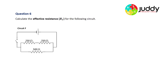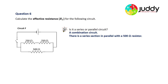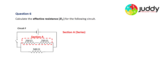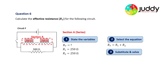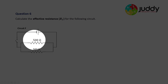Question six: calculate the effective resistance for circuit F. Once again it's a combination — there is a clear series section in parallel with a 500 ohm resistor. Section A is in series. For section A: the first resistor is 250 ohms and the second is 250 ohms. Since they're in series, we simply add them: R1 plus R2 equals 250 plus 250, giving a branch resistance of 500 ohms. That combination of series resistors is replaced by a single 500 ohm resistor.